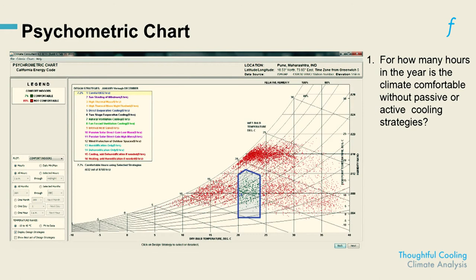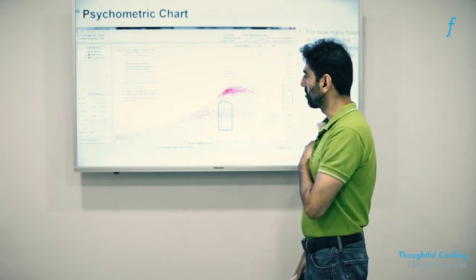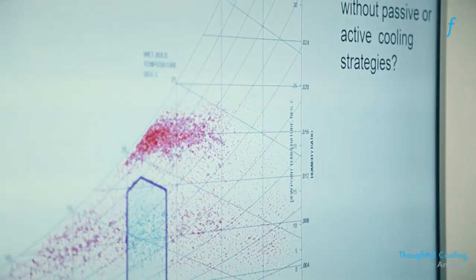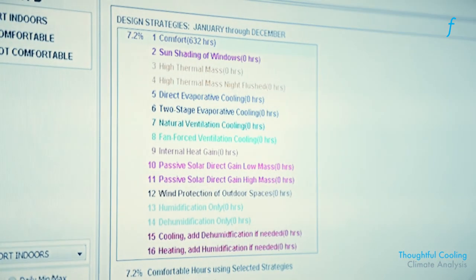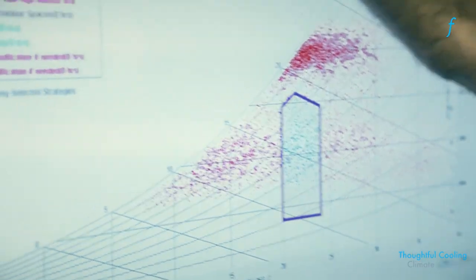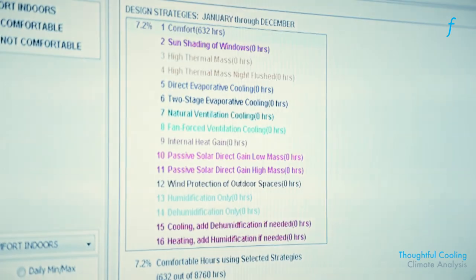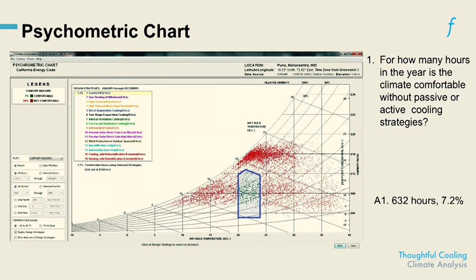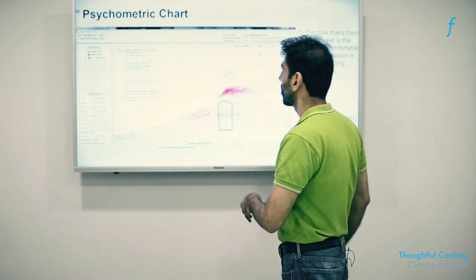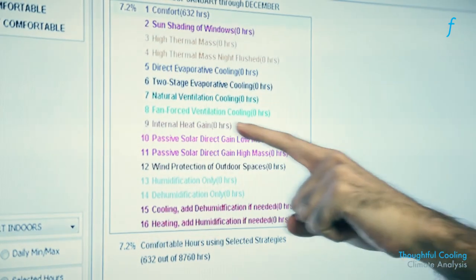The psychrometric charts, like we had indicated, are available in the Climate Consultant software. Another feature that we should perhaps bear in mind is that you can turn on a feature which allows you to estimate which kind of passive design strategy will be applicable for different times of the year in this city. So in Pune, if my goal is to have this as my comfort zone and get my psychrometric data points into this box, there's a whole host of passive design strategies which can be used which are only applicable for certain times of the year. The numbers are not really showing up here, but essentially what we are seeing here is that there are sun shading of windows, high thermal mass walls, natural ventilation, internal heat gain, so on and so forth.